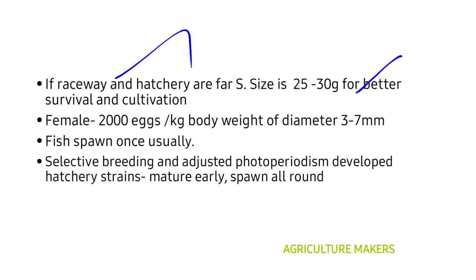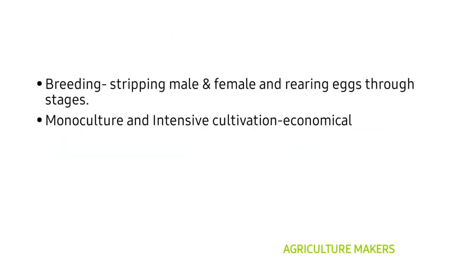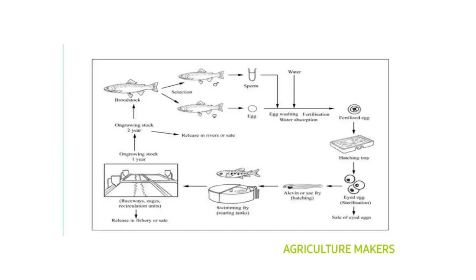The female trout has the potential of laying 2,000 eggs per kg of body weight, at a diameter of 3 to 7 mm per egg. Usually trout fish spawn once in their lifetime, but selective breeding and adjusted photoperiodism have developed new hatchery strains that mature early and spawn all year round. Breeding is done through stripping the male and female and rearing the eggs through stages. Trout is usually monocultured, and intensive cultivation is found to be economical in trout farming.